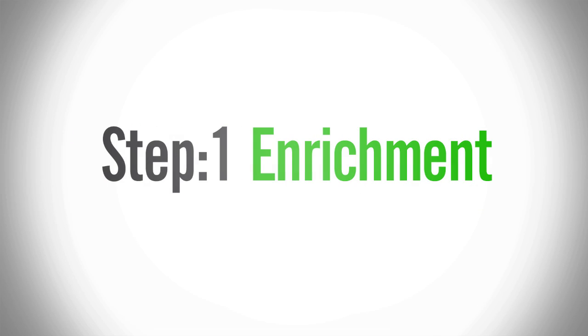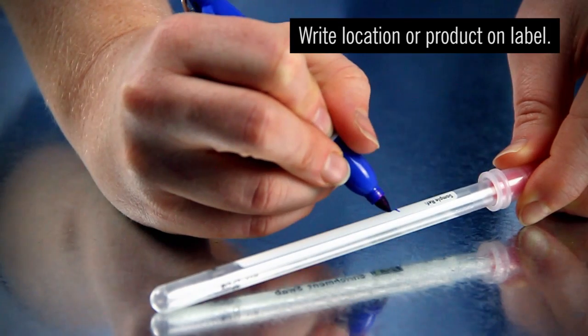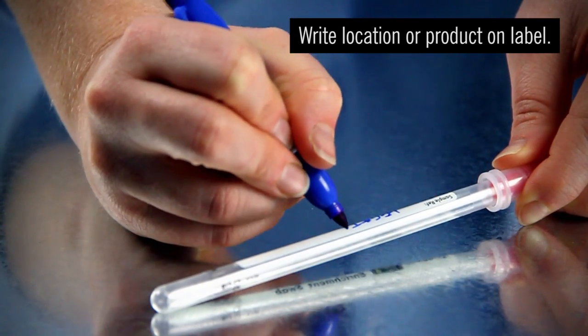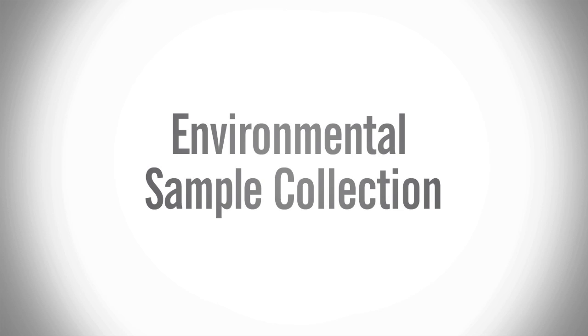MicroSnap is a two-step test. The first step is the enrichment step. Write the location or product on the swab tube label for easy identification. For environmental samples, you may collect a sample just like you would with an ATP test.